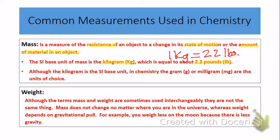Although we use the kilogram as the SI unit, in chemistry the gram or the milligram is going to be our unit of choice. So if they ask you on the test what is the fundamental SI unit of mass, you still have to state the kilogram. But we are going to use the gram and the milligram in chemistry because we're dealing with very small quantities of materials.